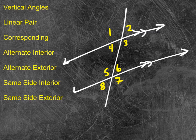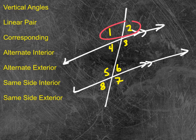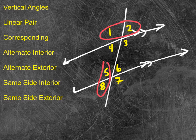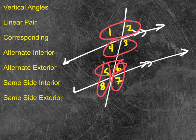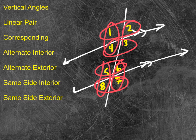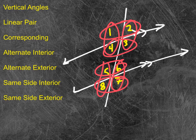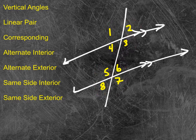Linear pairs would be like 1 and 2, 5 and 8, 4 and 3, 6 and 7, 5 and 6, 8 and 7, 1 and 4, 2 and 3. All of those are linear pairs, and they sum to 180.